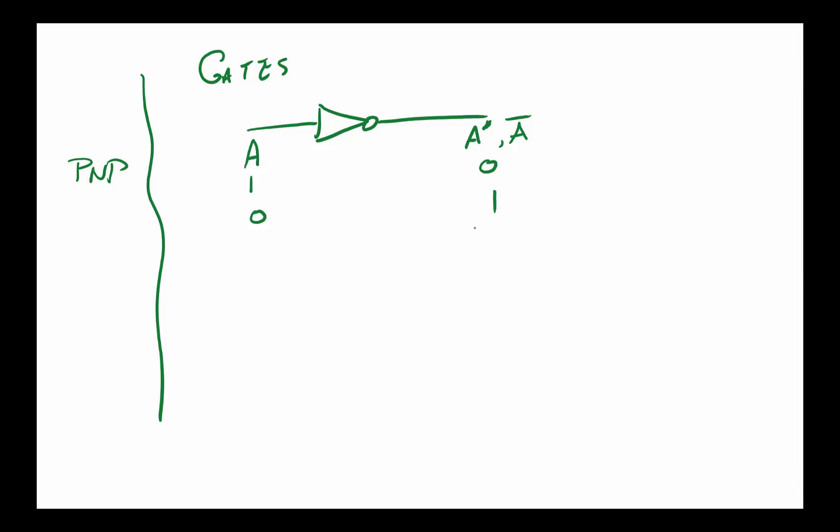Now the question is, how do you build this out of a transistor? If I use my transistor and put A in here at the base, and if I connect this to 5 volts with a 1k resistor here, then I will have A prime coming out here. Because look: if I have 0 volts in here, that means there's no voltage drop, which means this is open. If it's open, this is directly connected to 5 volts, so that equals 1.